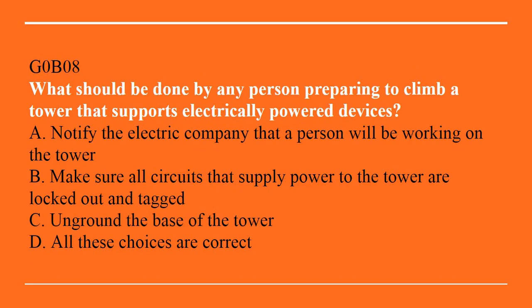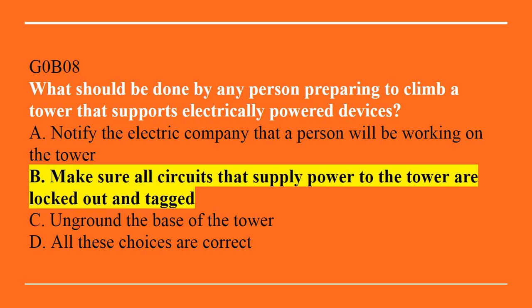G0B08: What should be done by any person preparing to climb a tower that supports electrically powered devices? A, notify the electric company that the person will be working on the tower. B, make sure that all circuits that supply power to the tower are locked out and tagged. C, unground the base of the tower. Or D, all of these choices are correct. Correct answer is B — make sure all circuits that supply power to the tower are locked out and tagged.